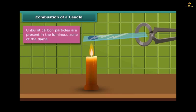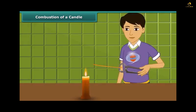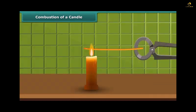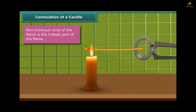Now observe another activity. Rohan is holding a thin long copper wire inside the flame with the help of a pair of tongs. The portion of the copper wire just outside the flame is getting red hot. This indicates that the non-luminous zone of the flame is the hottest part of the flame.